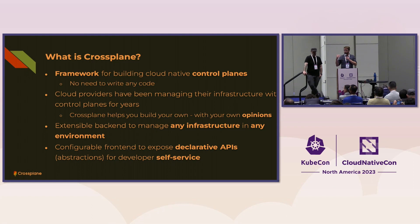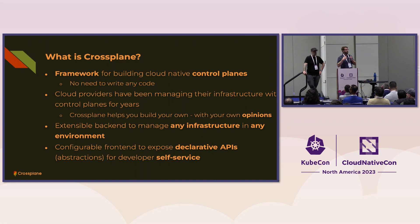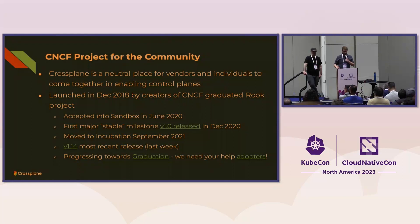Cloud providers have been running control planes for years — they manage their infrastructure with control planes — and Crossplane gives you a way to build your own. Think of Crossplane as a project with a top layer and a bottom layer. On the bottom, there's an extensibility story for providers that can teach Crossplane to manage any infrastructure in any environment that has an API. On the top layer, you can compose resources together and offer them as a new platform API abstraction to your developers.